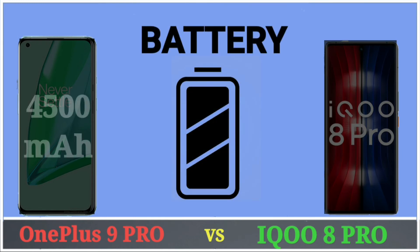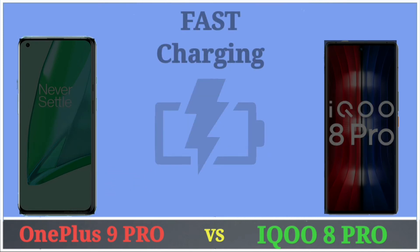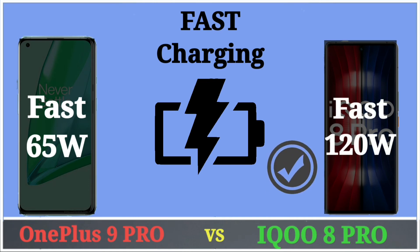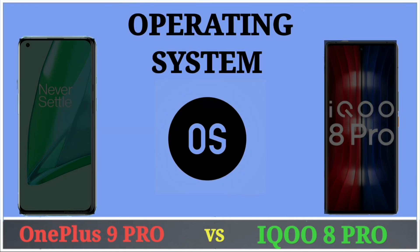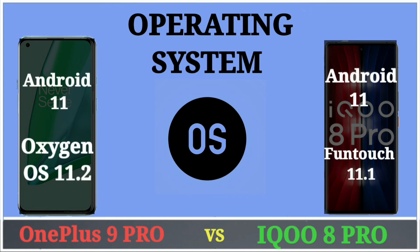For battery, both OnePlus 9 Pro and iQOO 8 Pro have a 4500mAh battery. However, OnePlus 9 Pro has 65W fast charging while iQOO 8 Pro has 120W fast charging. Both phones run Android 11 — OnePlus 9 Pro has OxygenOS 11.2 and iQOO 8 Pro has Funtouch OS 11.1.